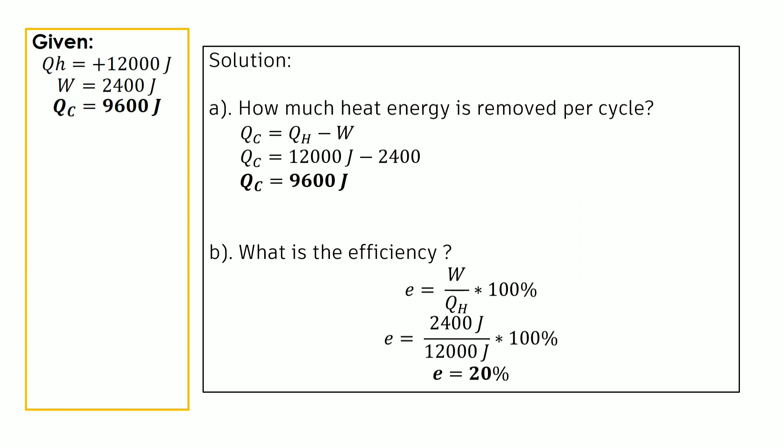Moving on to our next question: what is the efficiency of the gasoline engine? Efficiency equals work divided by heat added, multiplied by 100%. We have work of 2,400 joules divided by heat added of 12,000 joules, multiplied by 100%. The efficiency of the gasoline engine is 20%.